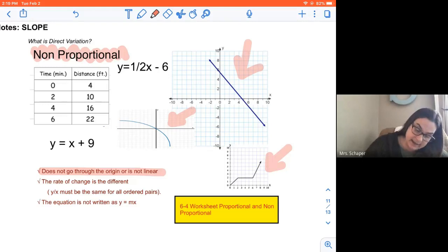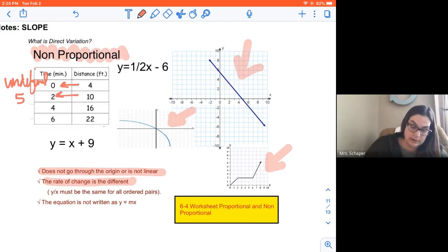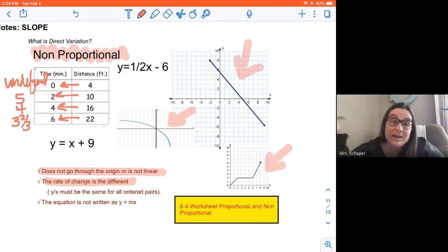In a t-table, the rate of change is different. So when I look at this 4 divided by 0, well, that's going to give me an error. We call that undefined. 10 divided by 2, that's 5. 16 divided by 4 is 4. 22 divided by 6 is going to be 3 and 2 thirds. So because all of those numbers are different, it's going to be proportional.